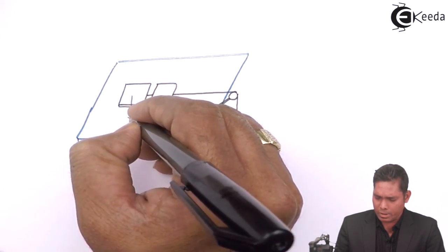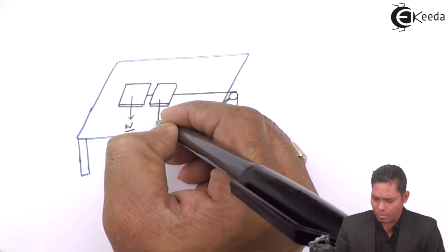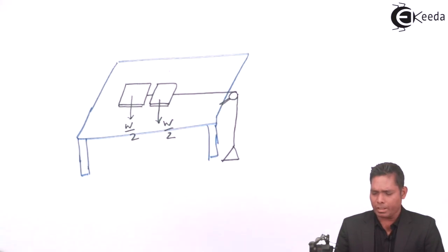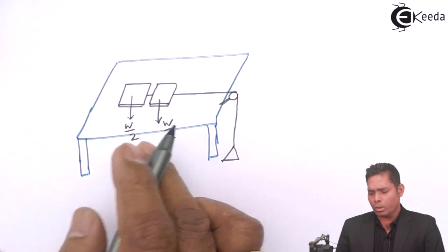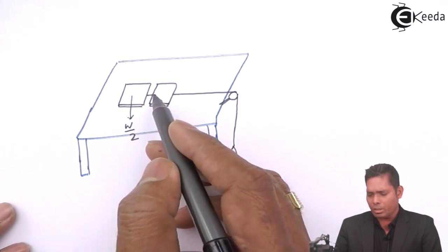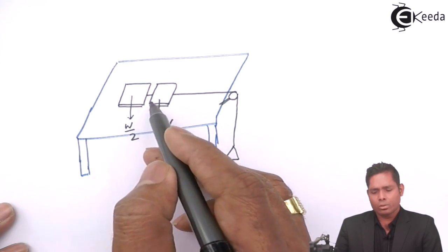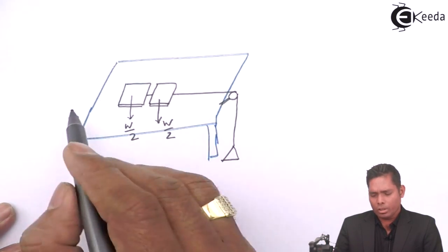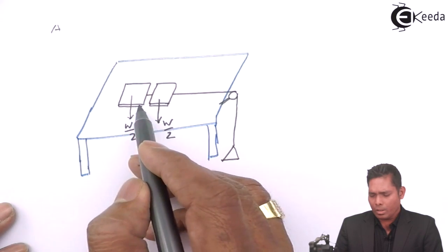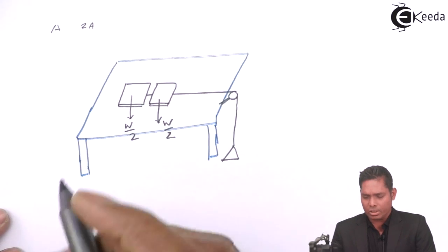Here, the weight is W by 2. The weight is W by 2, because I have taken each weight as W by 2. The total weight is, again, the same thing, but I placed at different places. Here, the two blocks are now placed side by side, so that the area becomes double. In the earlier case, the area was A. Now, in this case, A plus A, the area of contact is 2A. This is how the area is increased.